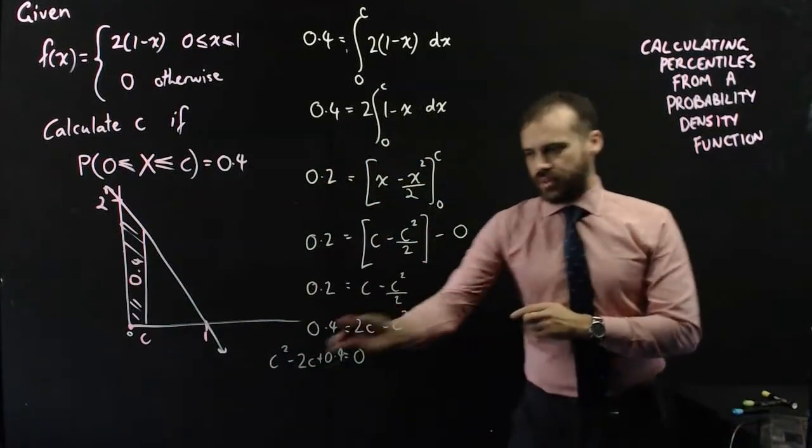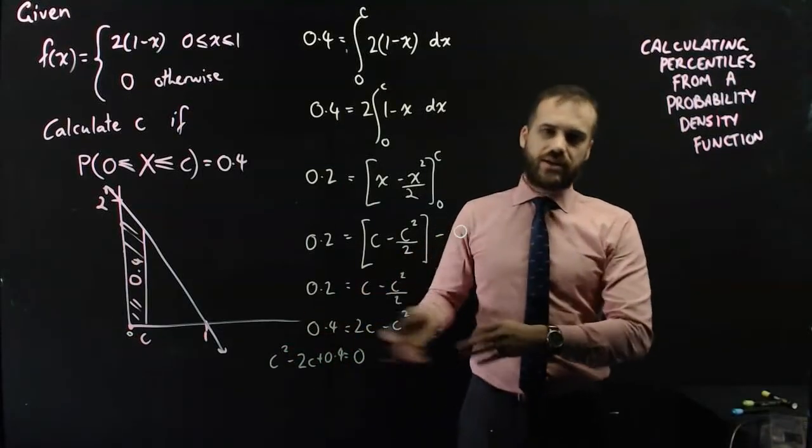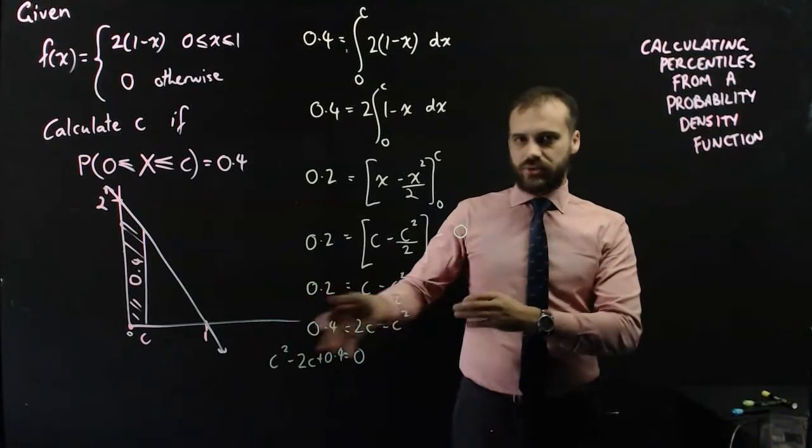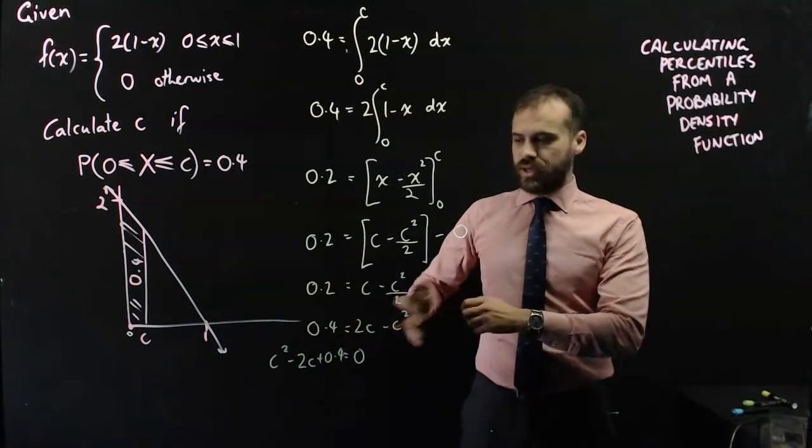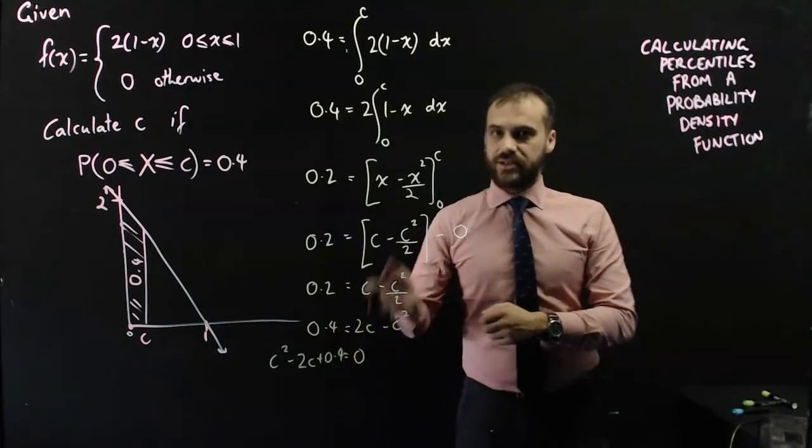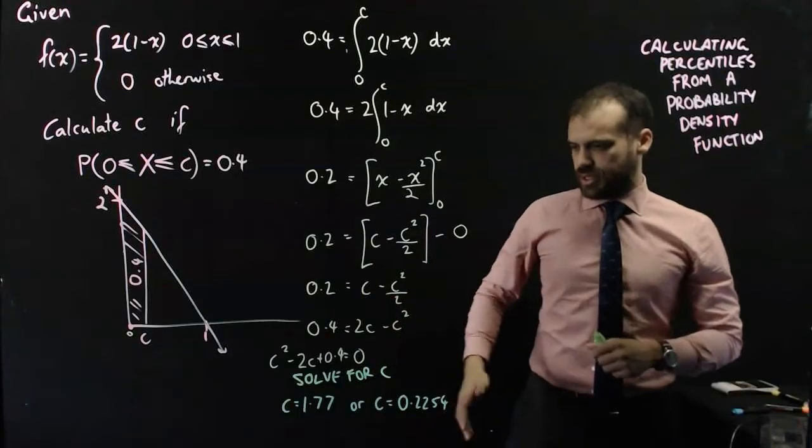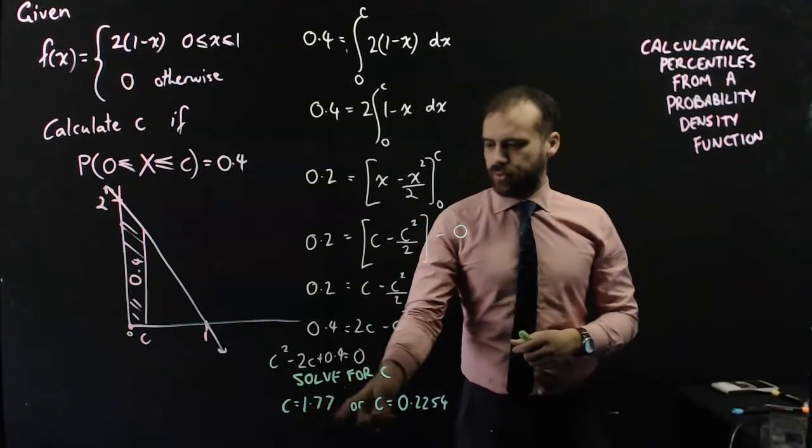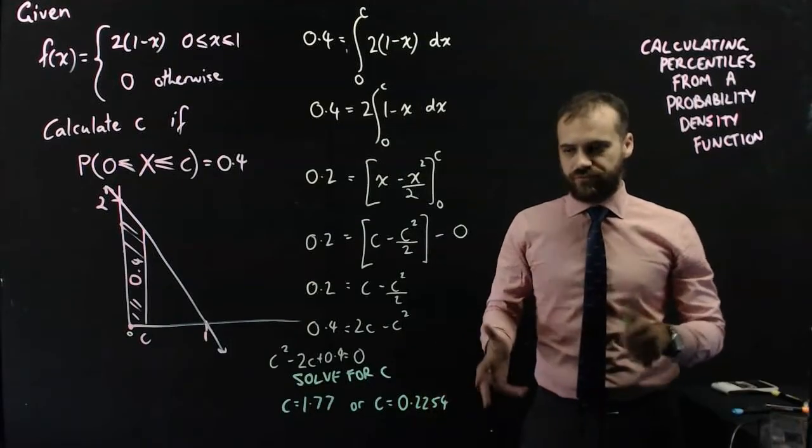Interesting. That is a quadratic, and I can solve that using the quadratic formula, or maybe n-solve on my calculator, or completing the square, whatever I choose. But I can solve that and get two C values. So I've solved it for C, I've gotten two answers, C equals 1.77, or C equals 0.2254.